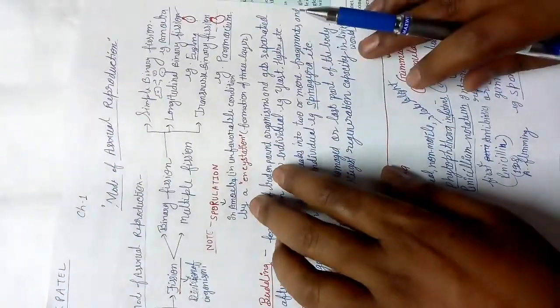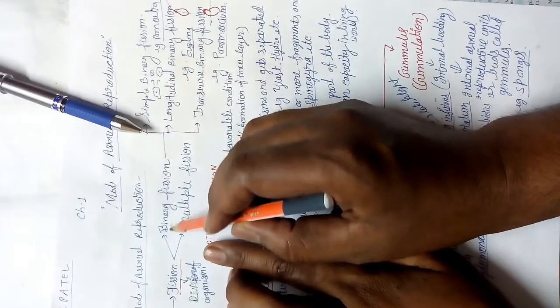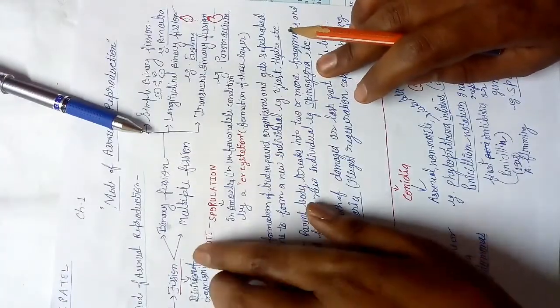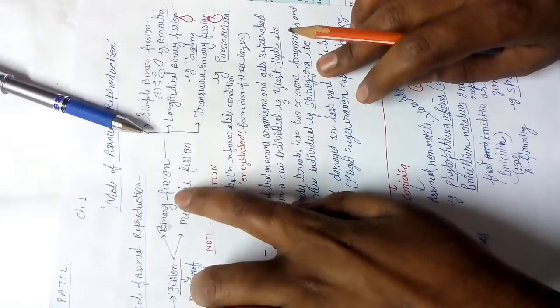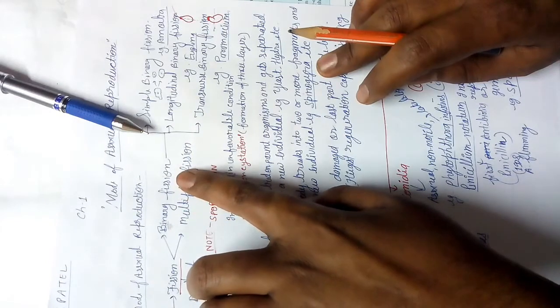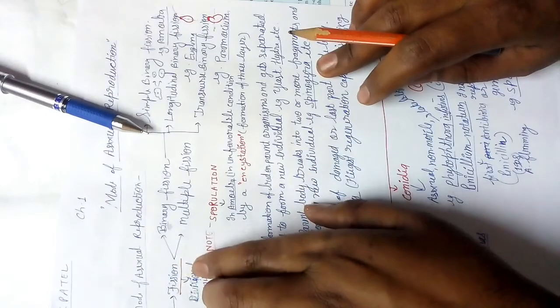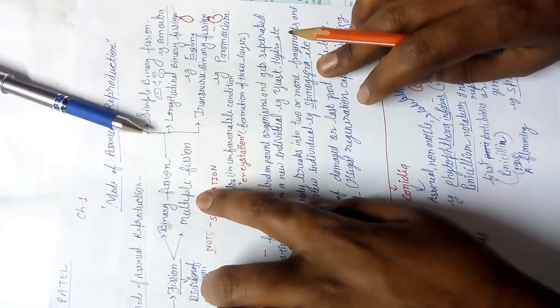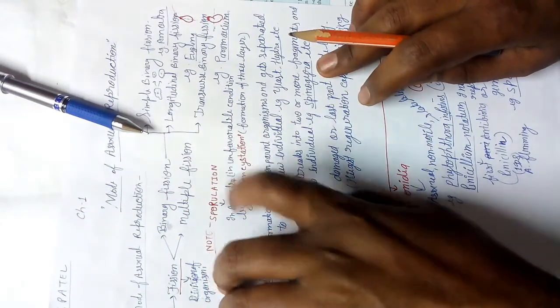Fission is of two types: binary fission and multiple fission. 'Binary' means two — so when a parent body divides into only two daughter cells, it is called binary fission. When a parent cell divides into more than two daughter cells, it is called multiple fission.